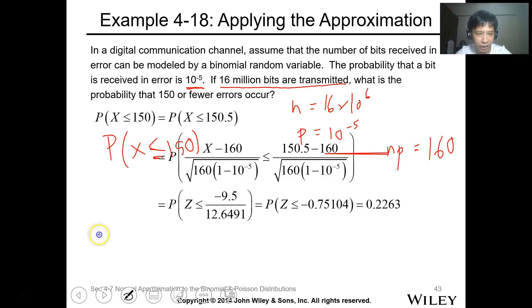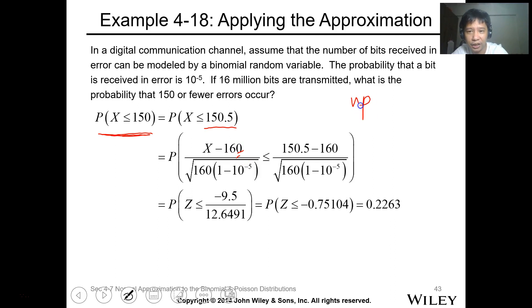So what's the approximation? The approximation, since less than 150, you add 0.5. Then, this one is NP. Our NP is 160. Then here, utilize this one, 1 minus P. P is 10 to the negative 5. This is NP. So this is the value. You'll substitute 150. And this one will have a value of negative 0.75104. So what's the probability? Distribution 1, negative 0.75104. Then equal. So 0.2263 is the answer. So you just apply the formula. For the exam, the formula will be given. Formula sheet is allowed.